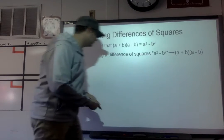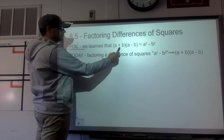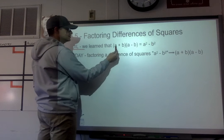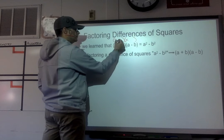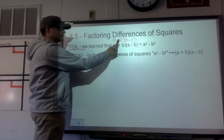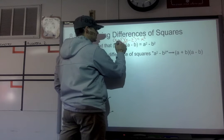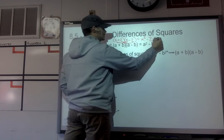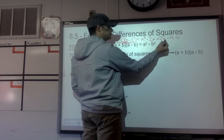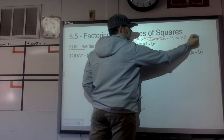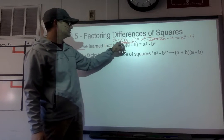When we talked about foiling, we learned that if we do (a + b)(a - b) — where the a's and b's are the same terms and the only difference is one has addition and one has subtraction — when we foiled, we got x² - 2x + 2x - 4. When we combined like terms, the -2x and +2x canceled, leaving us with x² - 4, which is your a term squared minus your b term squared.